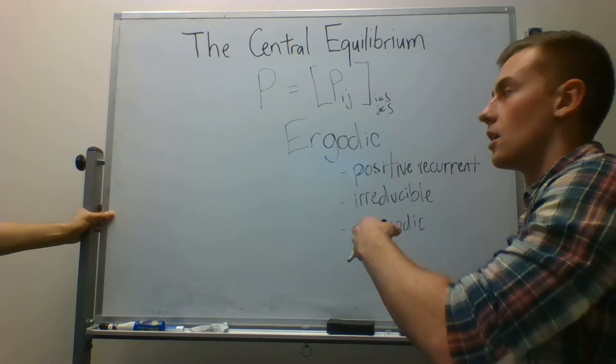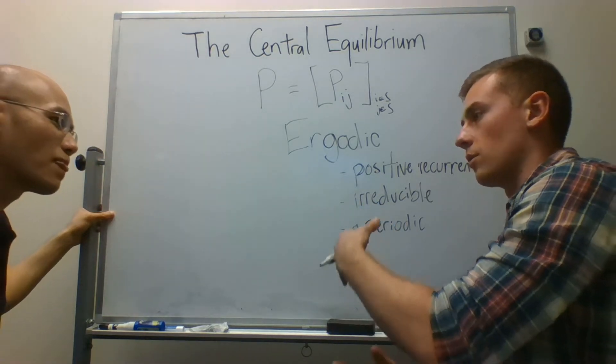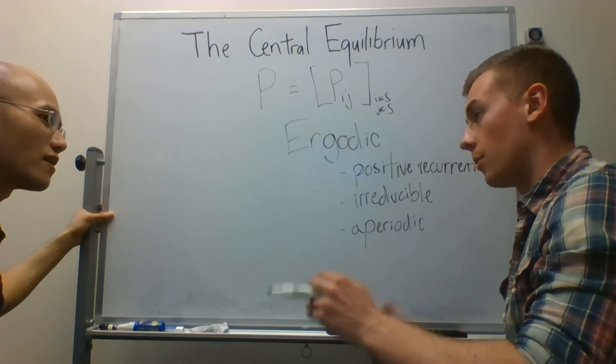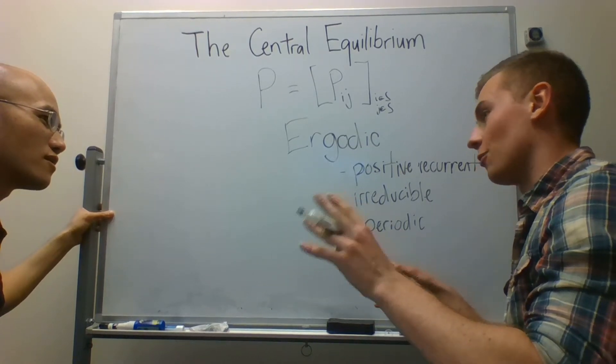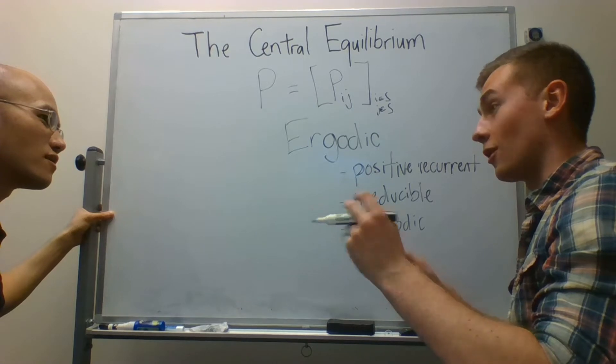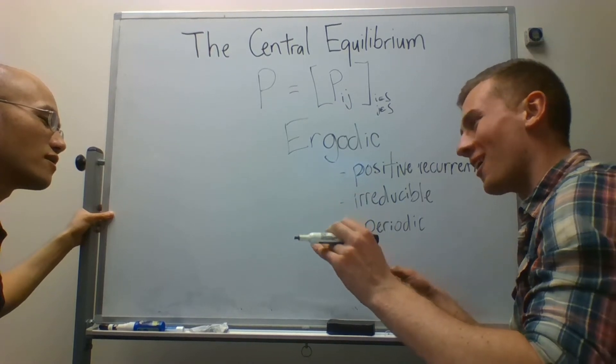What that means is you expect to at some point return to whatever state you leave, but you expect to wait forever to do so. And that's negative recurrence, which is to say it recurs, but it's a really bad recurrence.